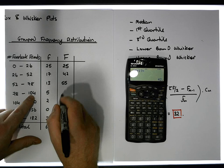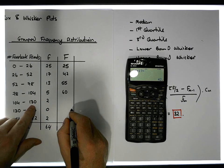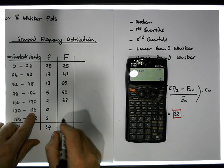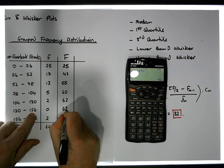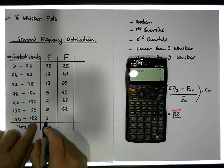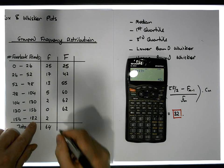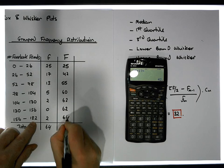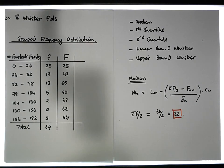Less than 104, so there's 5 plus 55 which gives us 60. How many are less than 130? Well, there's 62. How many are less than 156? Well, there's none in this class, so it's still 62 observations. And how many are less than 182? Well, all of the frequencies that represent observations are less than 182, so there's 64 in total.